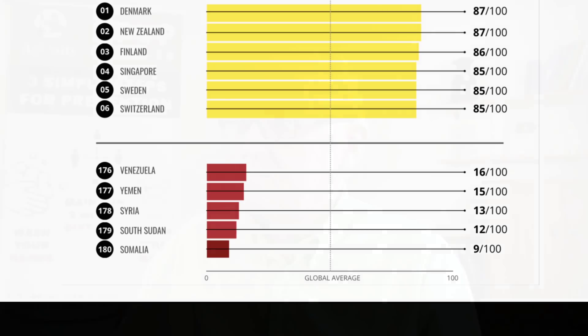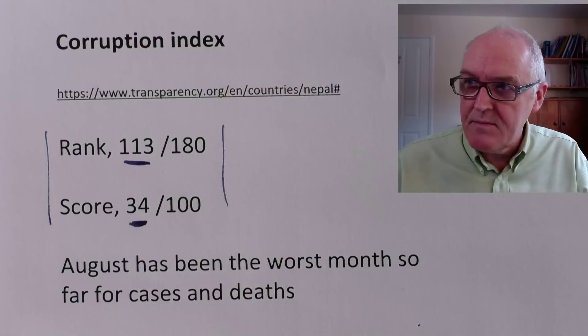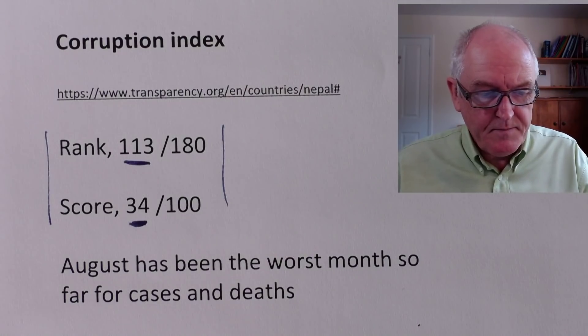These corrupt countries are certainly not helping the pandemic, because the money is all restricted to richer people — which is the problem. So Nepal's in that category. As I say, it's not in the worst five or six, but it's ranked 113.